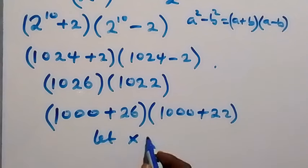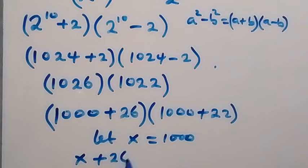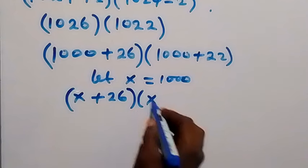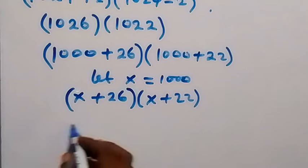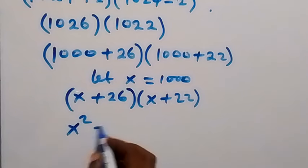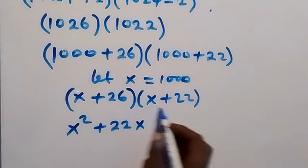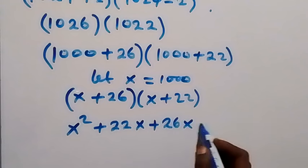Let the letter x represent 1000. Then x is 1000, so we have (x+26)(x+22). When we expand this, x multiply first becomes x squared plus 22x, then 26 we multiply that's plus 26x, plus 26 times 22.